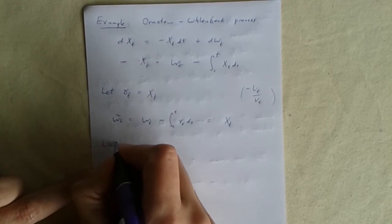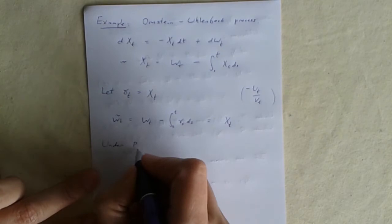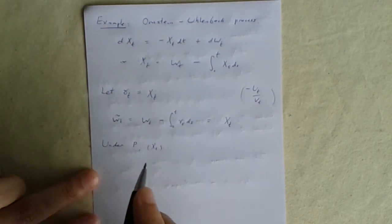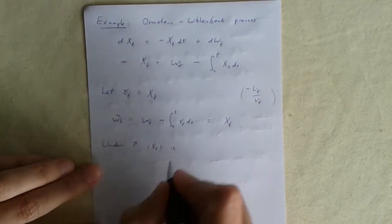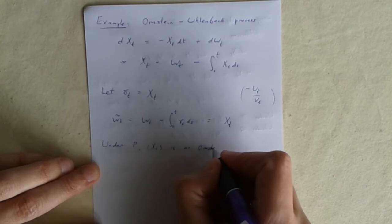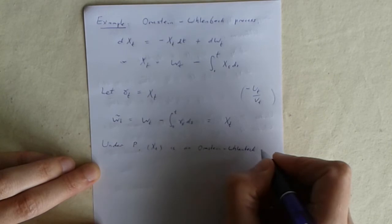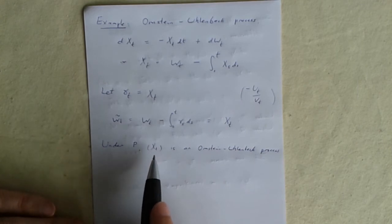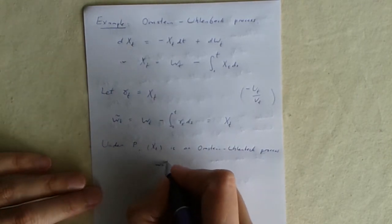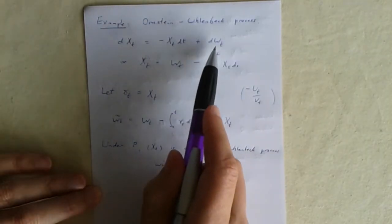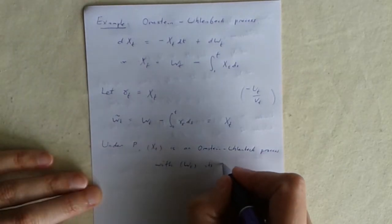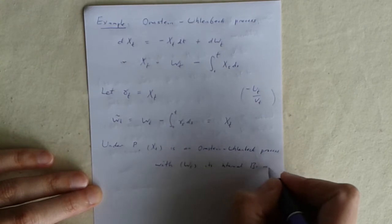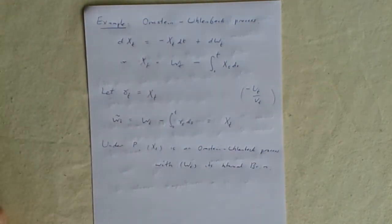So we've got these two processes they both turn out to be just Xt again. What can we conclude? Under P the probability measure we first thought of, that's where W is a Brownian motion, Xt is an Ornstein-Uhlenbeck process. The property of being an Ornstein-Uhlenbeck process comes down to just statements about the distributions of certain things, so that can change when you change the probability measure. But as long as we stick to P, Xt is just an Ornstein-Uhlenbeck process with Wt here being its internal Brownian motion.